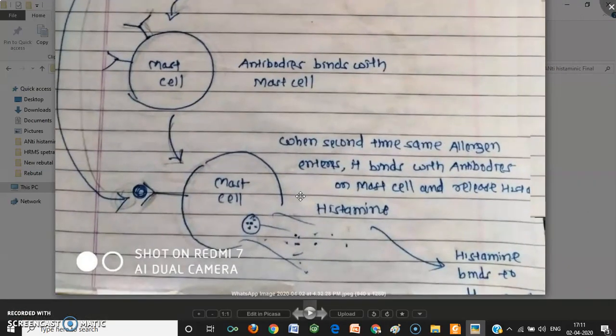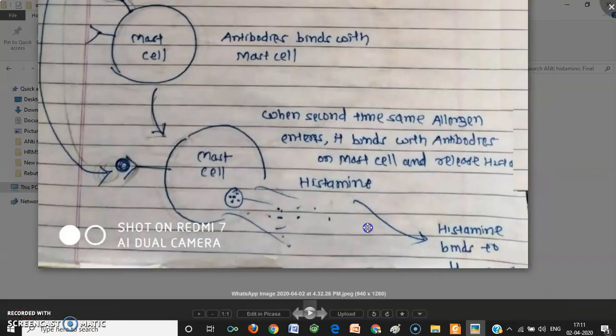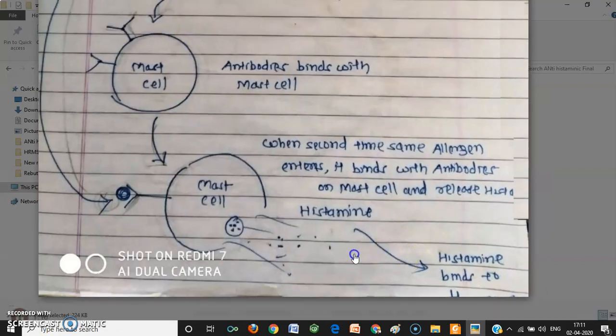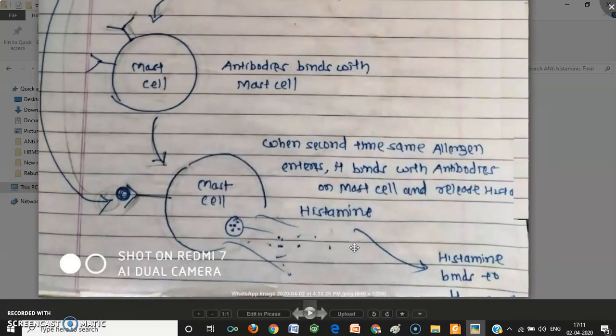Binding of histamine to the H1 receptor causes several effects. First, it causes vasodilation — you can see your nose turn red because vasodilation has started. Second, sneezing and coughing begin, because histamine signals the body to expel whatever allergen has entered through the nose. Actually, this is a beneficial protective effect.